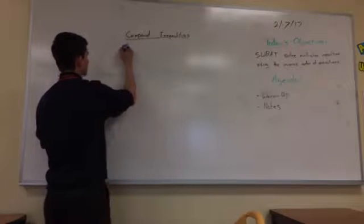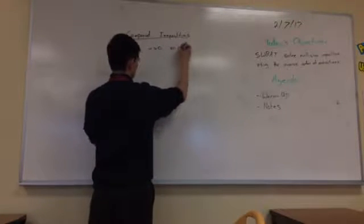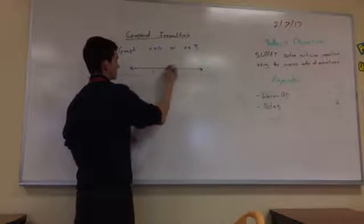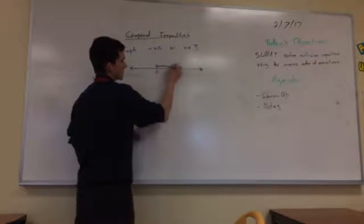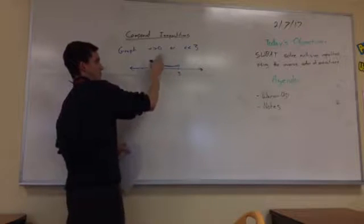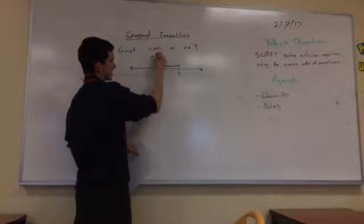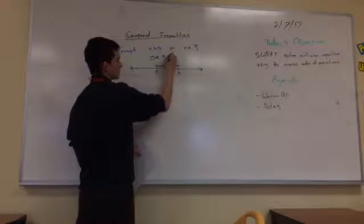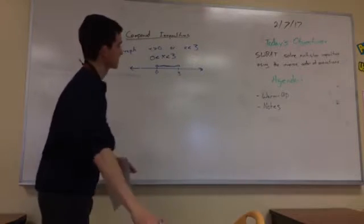So x is greater than 0 or x is less than 3. Number line: here's 0, here's 3. x is less than 3 would be this way, but x is greater than 0 is that way. So x is greater than 0, less than 3 — it's somewhere in between there. That's how you'd graph it. Open dots because it's not equal to. Notice it's one inequality, which means I can join these together: x is still greater than 0 and x is also less than 3. x exists between 0 and 3.